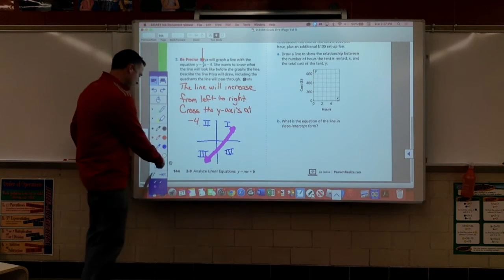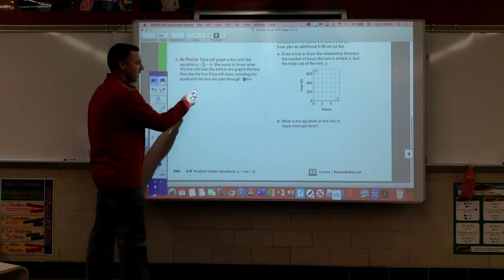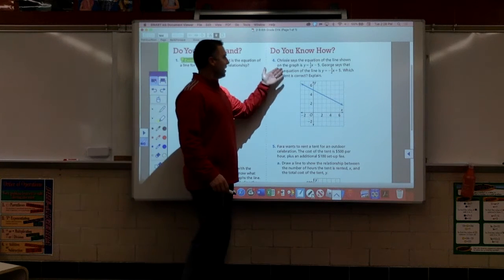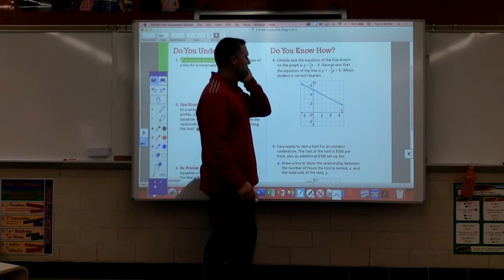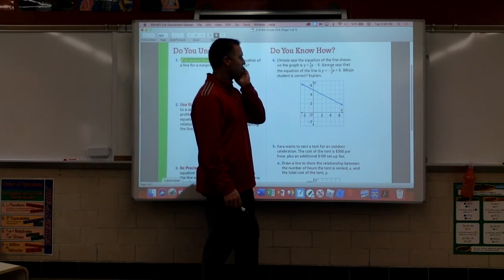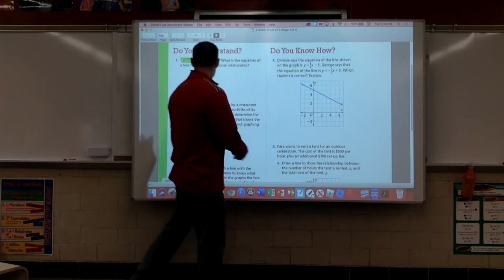Nice job, Mr. Dole. Thank you. I have to ask Jilly for help on that one. Chrissy says the equation of the line shown on the graph is y equals one-half x minus five. George says that the equation of the line is y equals negative one-half x plus five. Which student is correct?